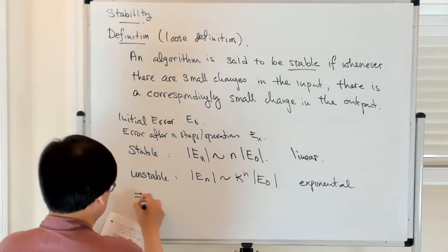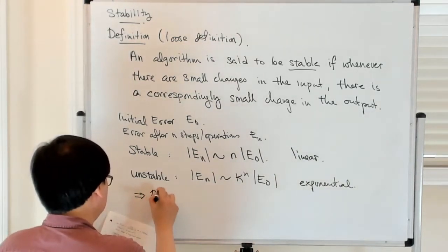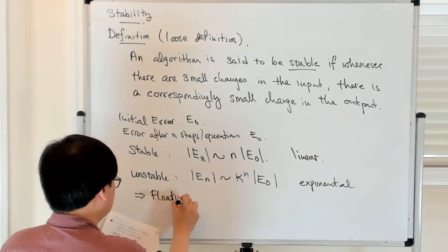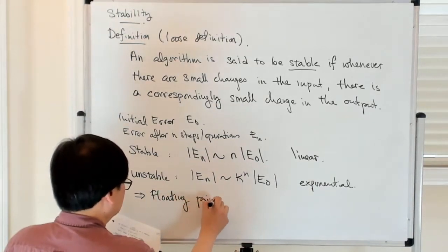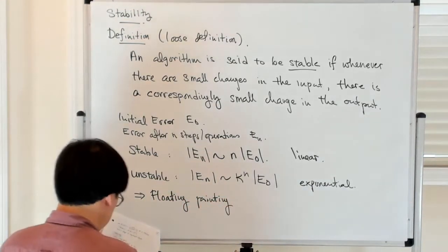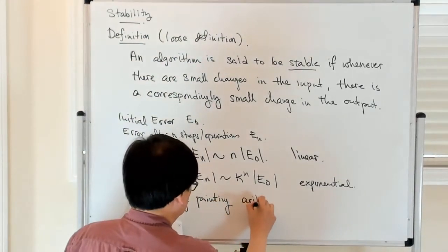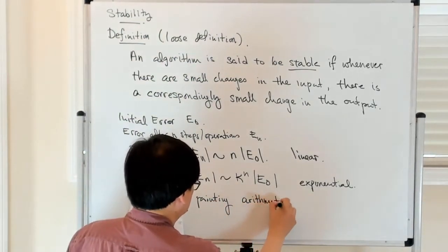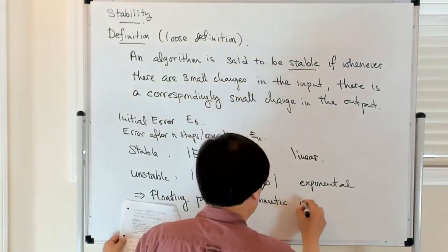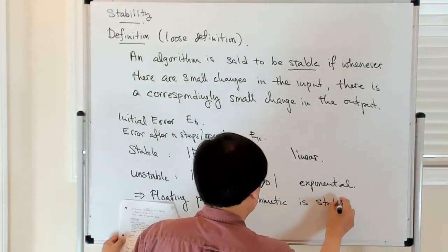And then as an example, which we discussed before, floating point arithmetic is stable.